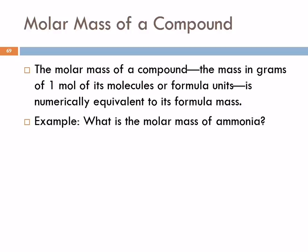So that's formula mass. Molar mass is what we use more often, and this is where we use grams. The molar mass of a compound is the mass in grams of one mole of molecules or formula units. It's the same number as the formula mass — just different units. Just like one atom of carbon weighs 12 atomic mass units, one mole of carbon weighs 12 grams.